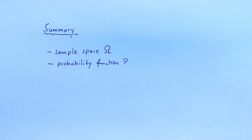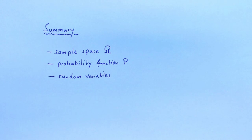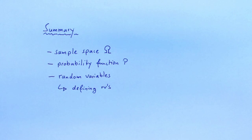Let's summarize what we have learned. We learned about the sample space, which collects all possible samples, and the probability function P, which assigns probabilities to these samples. We learned about random variables, which describe samples using numbers. We can define random variables directly based on properties of the sample, or by transforming or combining existing random variables. Lastly, we discussed how to compute probabilities for random variables.